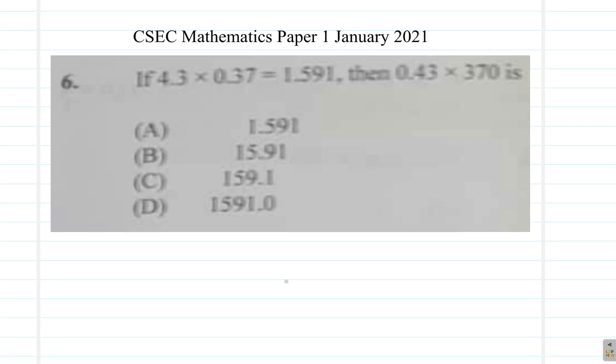Question 6. It says, if 4.3 multiplied by 0.37 is equal to 1.591, then 0.43 multiplied by 370.